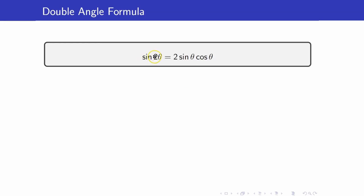What is this saying? Sine of double an angle is equal to 2 times sine of the original angle times cosine of the original angle.